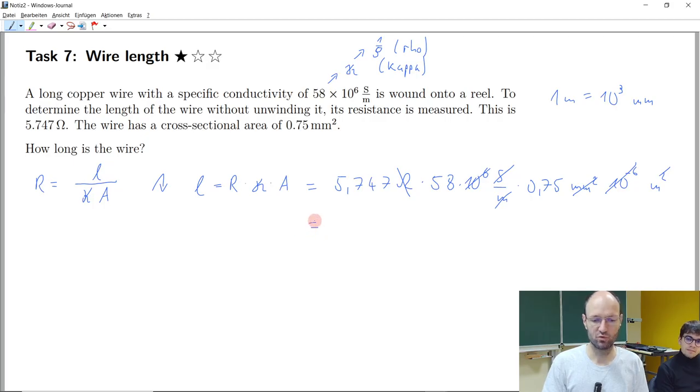If we would do it the other way around, so we end up here with 250 meters. So if we would say, we take the 5.747 ohm for the resistance, we take the 58 times 10 to the power of 6 Siemens per meter for the conductivity. And if we take the 0.75 square millimeter for the area, and if we now would say, a meter, as we've written down here, a meter is the same as 10 to the power of 3 square millimeter.